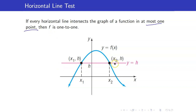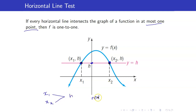For example, here I have a graph of a function. When we draw a horizontal line, what we are doing is getting one value for y. And if it intersects the graph at two points — let's say this is x1 and this is x2 — this means that x1 and x2 went to the same y-coordinate h. And therefore, this is not one-to-one. So remember that the horizontal line test is a test to determine whether a function is one-to-one.